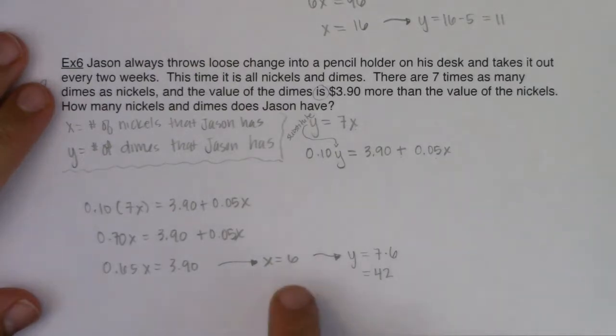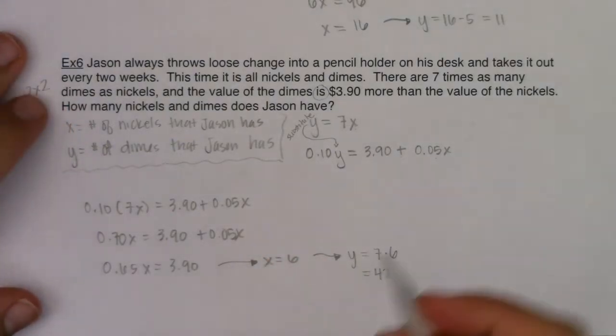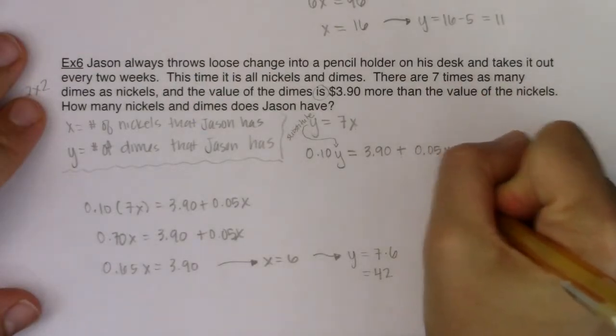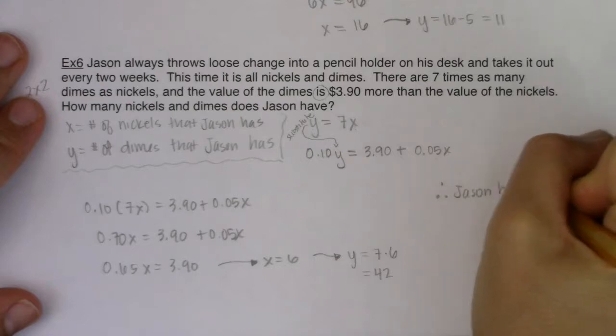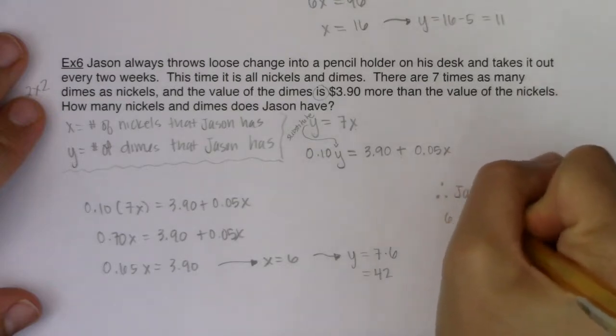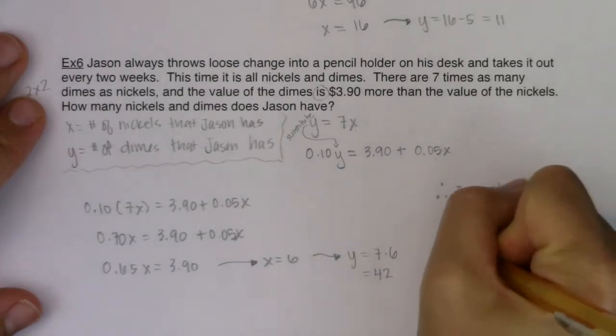So this is ultimately telling me I had 6 nickels and 42 dimes. So we would say, therefore, Jason has 6 nickels and 42 dimes.